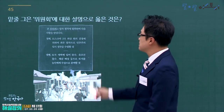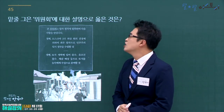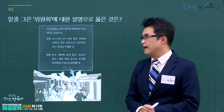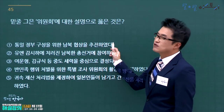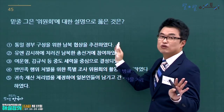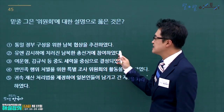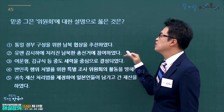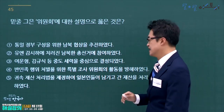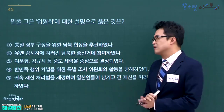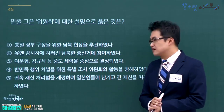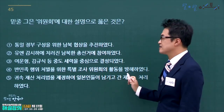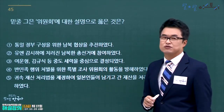모스크바 3국 외상회의 결정에 의해 좌우합작으로 민주주의 임시정부 수립을 추진한 것은 좌우합작위원회입니다. 남북협상 추진은 김구·김규식 주도, 유엔 감시 남북한 총선거 참여는 다른 내용입니다. 여운형·김규식 등 중도세력을 중심으로 결성된 것이 좌우합작위원회이므로 정답은 3번입니다.